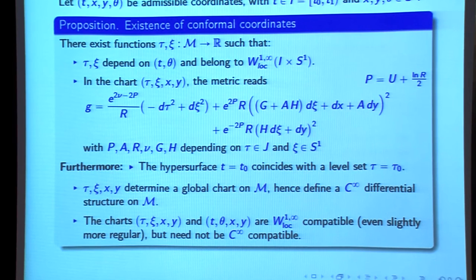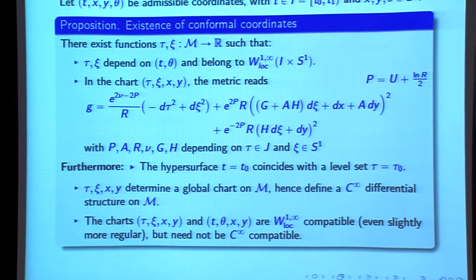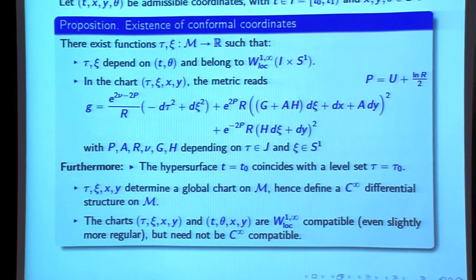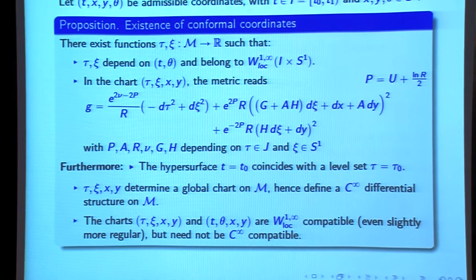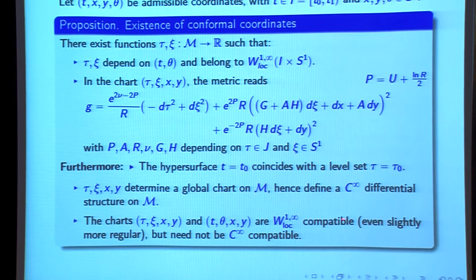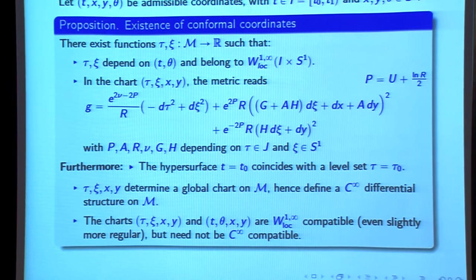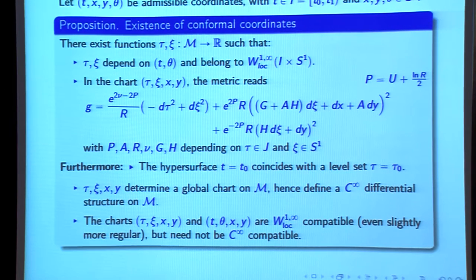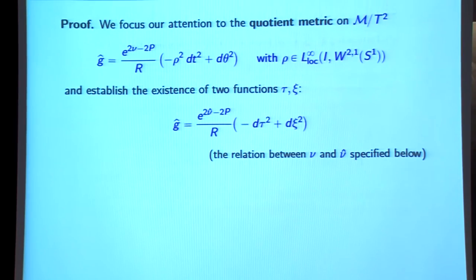The main point of this transformation is that we have to be careful because of the low regularity. The charts τ, ξ and t, θ, ξ are only W^{1,∞} compatible — one expressed in terms of the other is only Lipschitz continuous, certainly not C^∞ regular. At every step you have to be careful to make sure the regularity is well described.